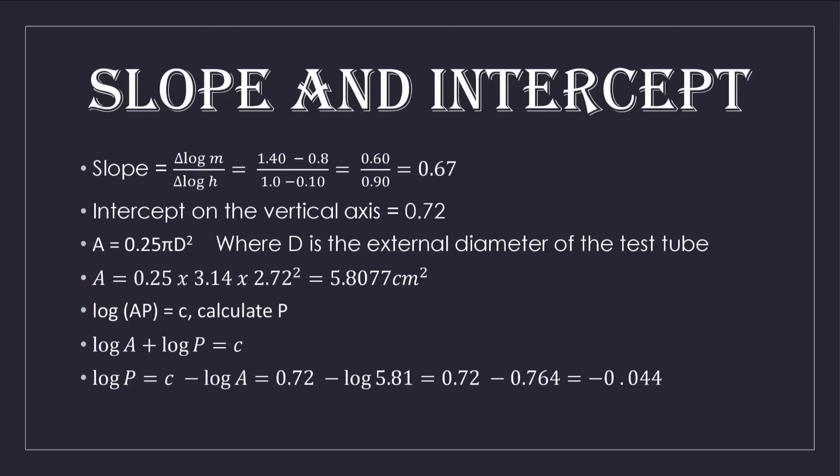We can deduce the slope, which is simply a change in log M over change in log H. When computed, that gives us 0.67. Taking note of the intercept C on the vertical axis, our value there is 0.72. As part of the equations in this practical, we should evaluate A equal to 0.25 pi D squared, where D is the external diameter, 2.72 cm. Substituting the values, our answer is 5.8077 cm squared.